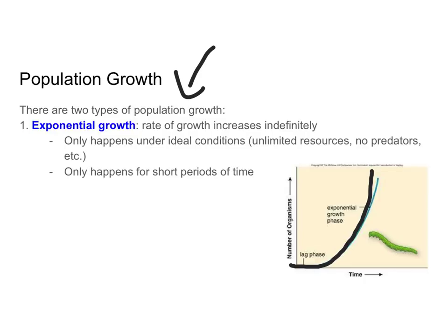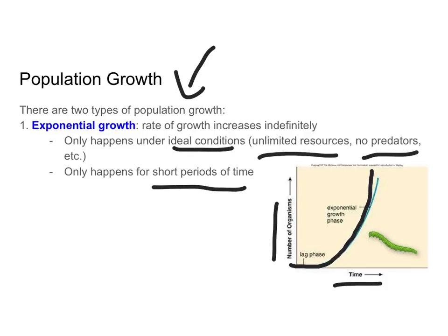With exponential growth, we end up with a lot of organisms in a short period of time. This can only happen under ideal conditions — unlimited resources to support this exponential growth, no predators, et cetera. Ideal environmental conditions don't exist very often, so this can really only happen for very short periods of time.